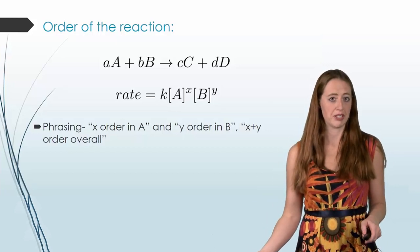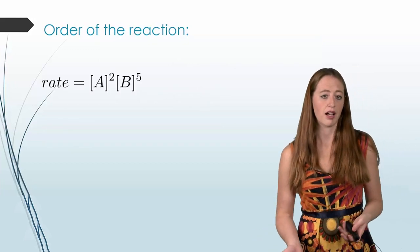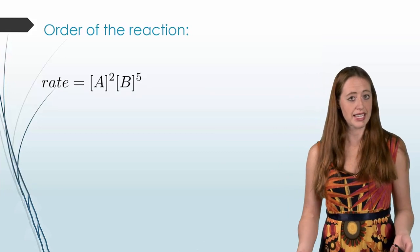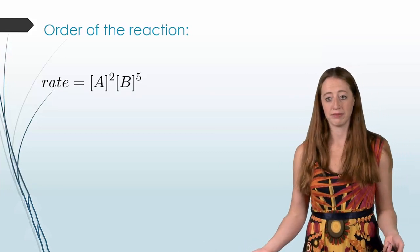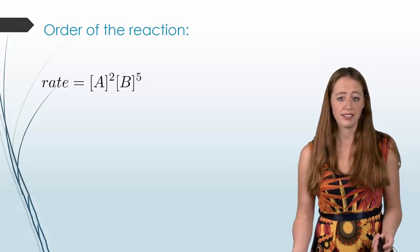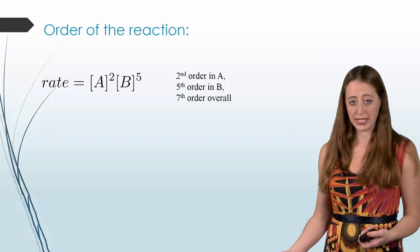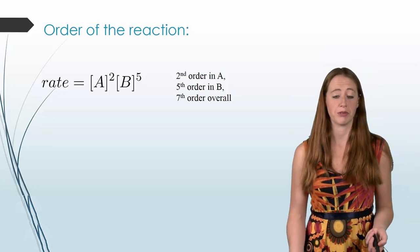So let's do a few examples here to make it a little bit more clear. Let's take a random rate law. So we have A raised to the second power, B raised to the fifth power. The way that we would phrase this is that it is second order in A, fifth order in B, and seventh order overall.